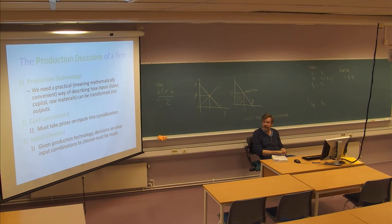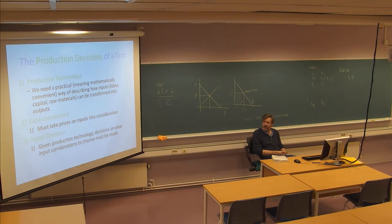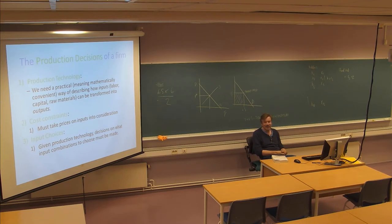We need a mathematically convenient way of describing how inputs work. In this simplified definition, inputs into production form a two-dimensional set of variables: labor and capital. Of course, if you have capital you can buy raw materials, so you can think of the basic inputs as human beings and money — basically necessary to produce anything. For historical reasons we stick to this labor and capital definition.